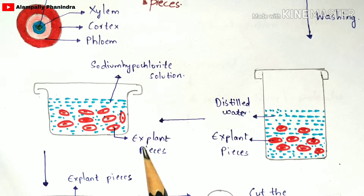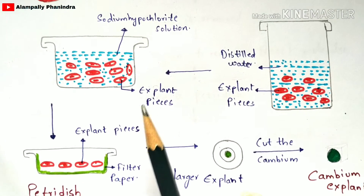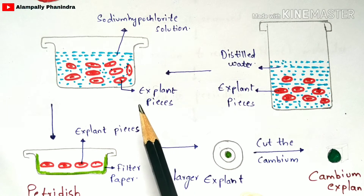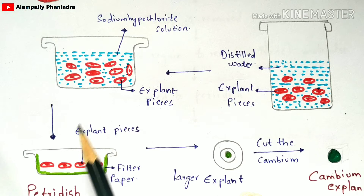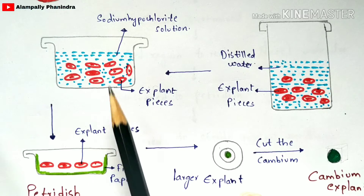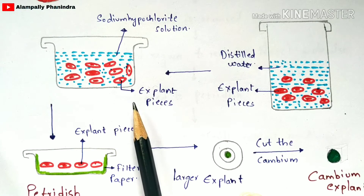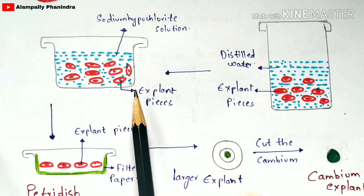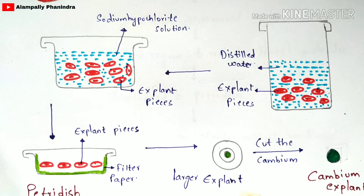After the sodium hypochlorite treatment, take a petri dish and place a filter paper in it. Before placing the explant pieces on the filter paper, wash the explant pieces again to remove any remaining sodium hypochlorite solution molecules. After washing, place them in the petri dish on the filter paper.